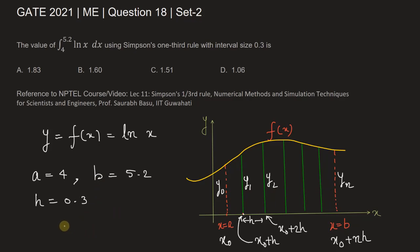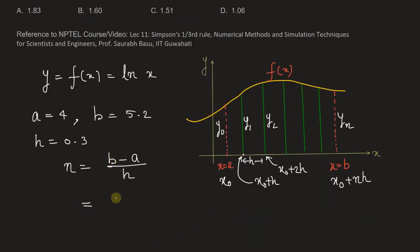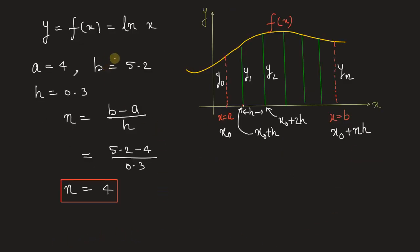From this given data we can find the number of intervals. n will be given by (b minus a) divided by h. That is (5.2 minus 4) divided by 0.3, so n equals 4.